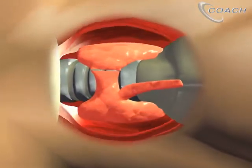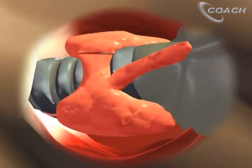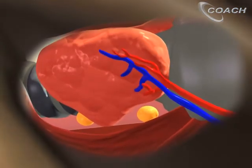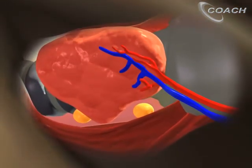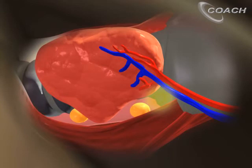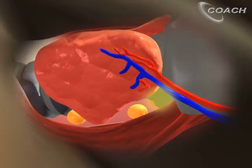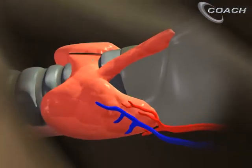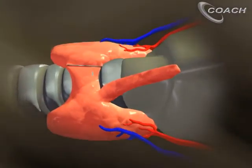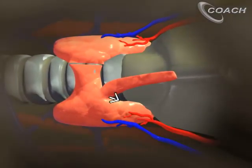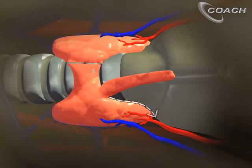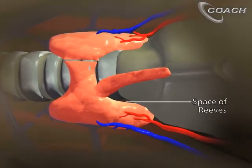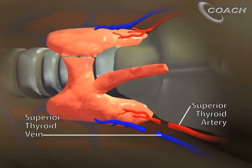Next we'll rotate the strap muscles laterally and pull the thyroid anteriorly. This will help us expose the clear portion beneath the superior pole of the thyroid and expose the lateral portion of the superior thyroid vessels. Next, we'll turn our attention to the space of Reeves and divide the tissue between the thyroid and the cricothyroid muscle to open the space of Reeves. Then we'll divide the superior pole vessels.